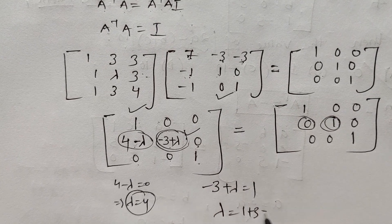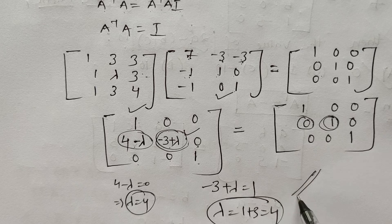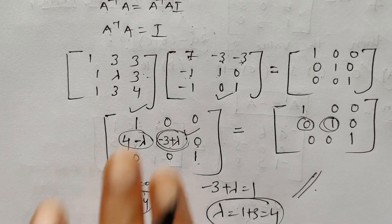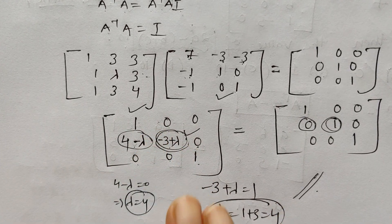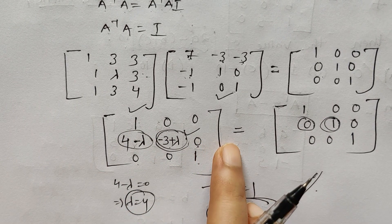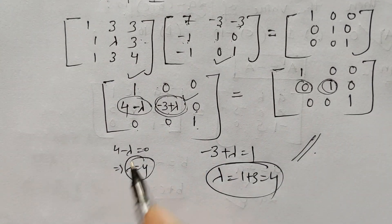You can use either method, but this is a shorter method. So I recommend for similar questions, go for this method to get the value of unknown lambda. Always make use of the given matrix and given inverse matrix.